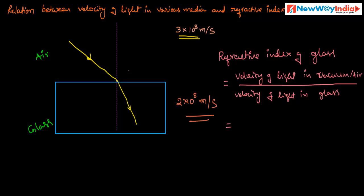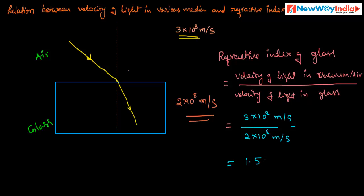The velocity of light in vacuum or air is 3 into 10 power 8 meter per second, and the velocity of light in glass is 2 into 10 power 8 meter per second. So the refractive index equals 3 by 2, which is 1.5. This is a ratio of two equal quantities, so there is no unit. Therefore, the refractive index of glass is 1.5.